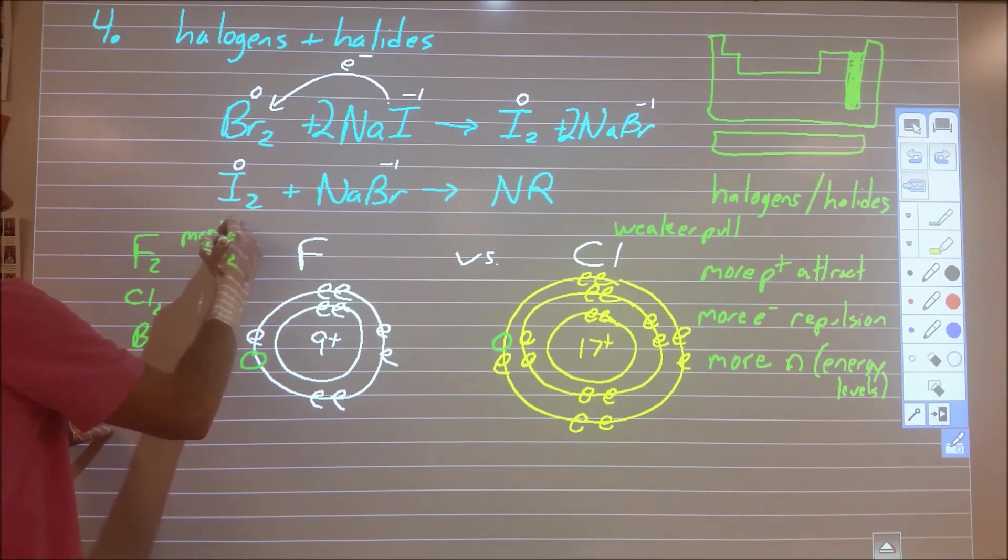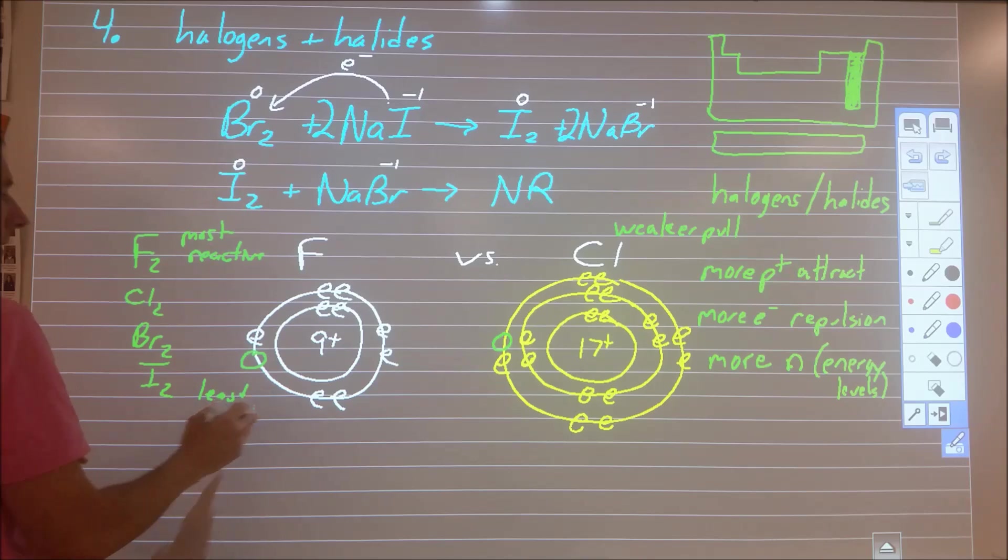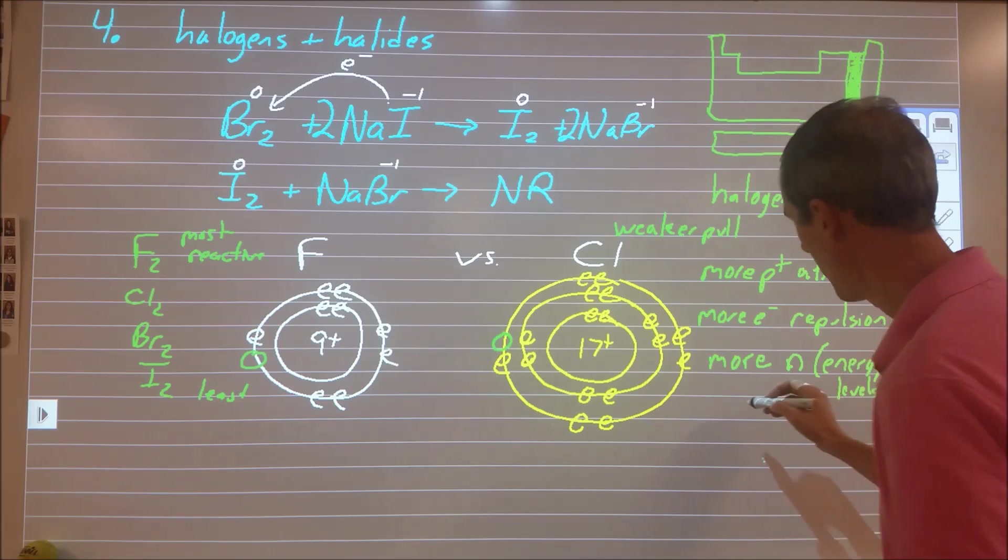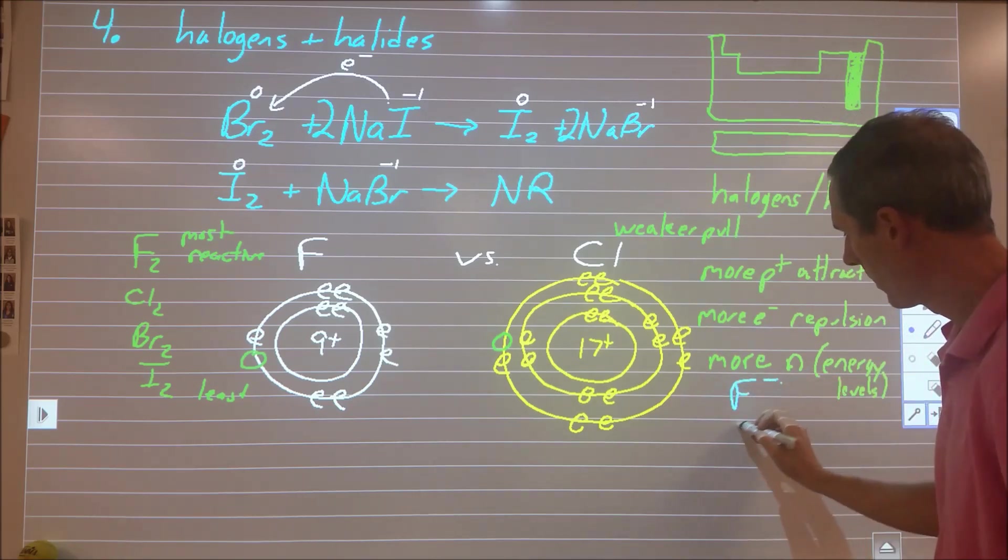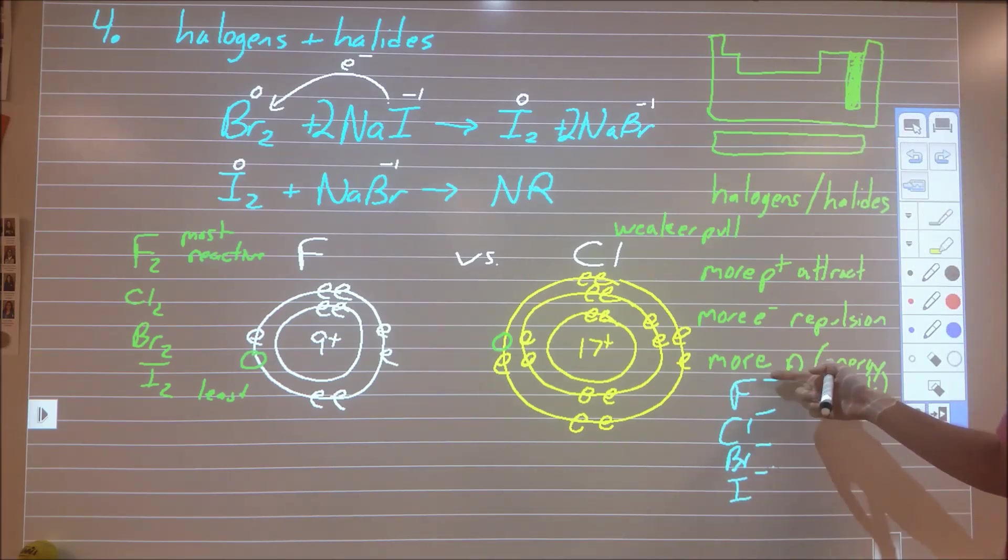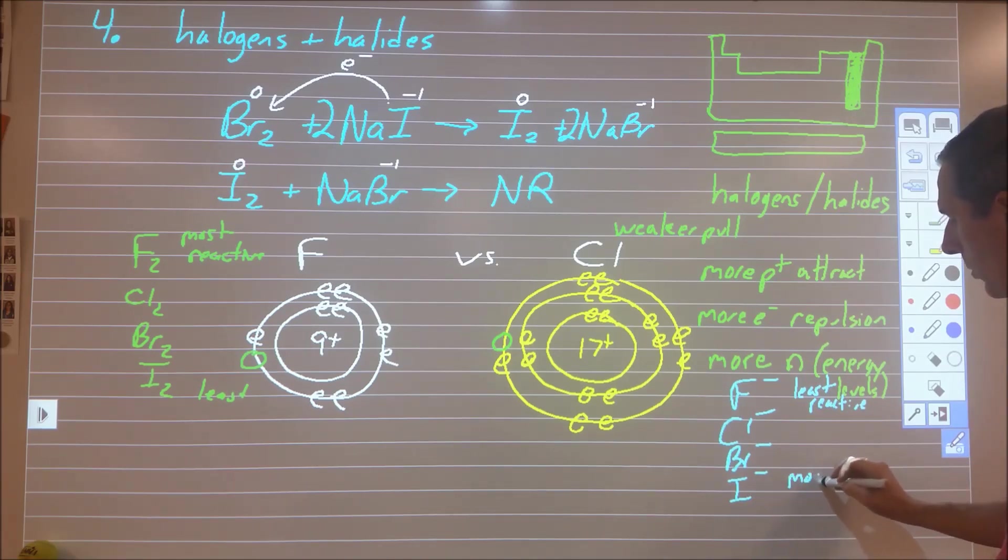This is the most reactive because it is the best thing at pulling electrons. And this is the least reactive because it is the worst thing at pulling electrons. Now we can contrast that to go in the opposite order. Fluoride, chloride, bromide, and iodide. Fluoride is the best thing at pulling electrons. But here it has the electrons. So it's not going to react. So this is now the least reactive of the halides. And as we move down, now we've got the weakest pull on the electrons for the halides. And so this would be the most reactive.